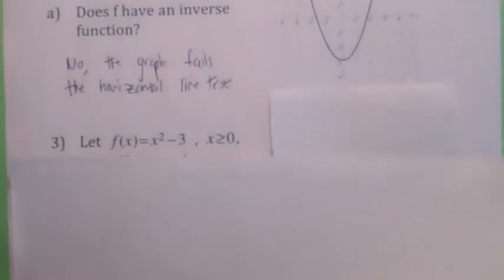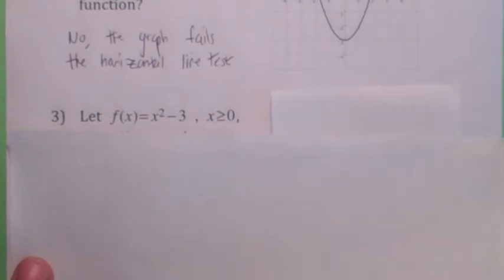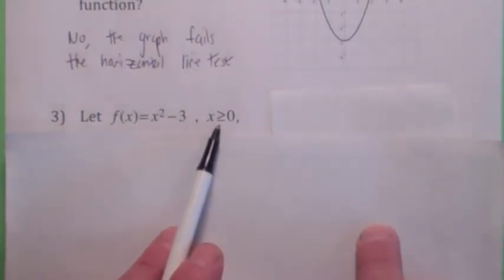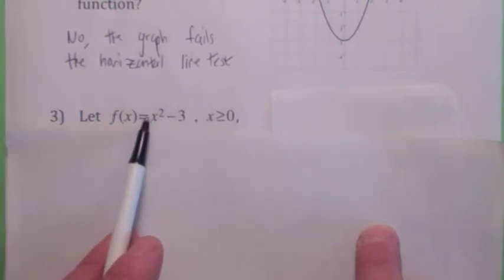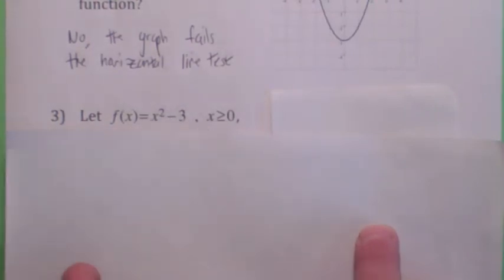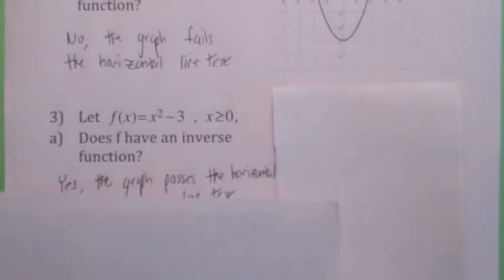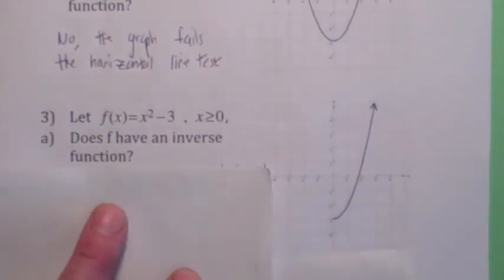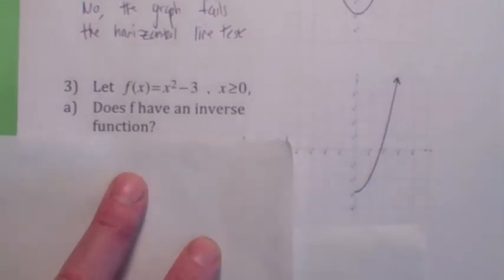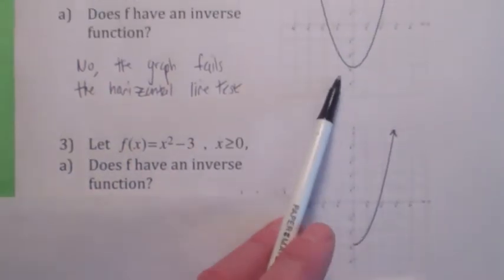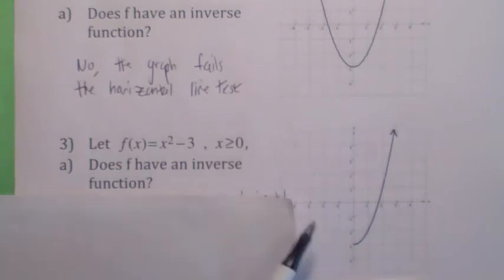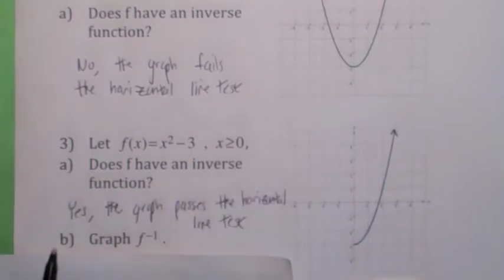On your homework you might see this: when they put a domain restriction, we're only looking at the graph when x is greater than or equal to zero. So the left half gets chopped off. Is this graph one-to-one? The answer is yes — it passes the horizontal line test.